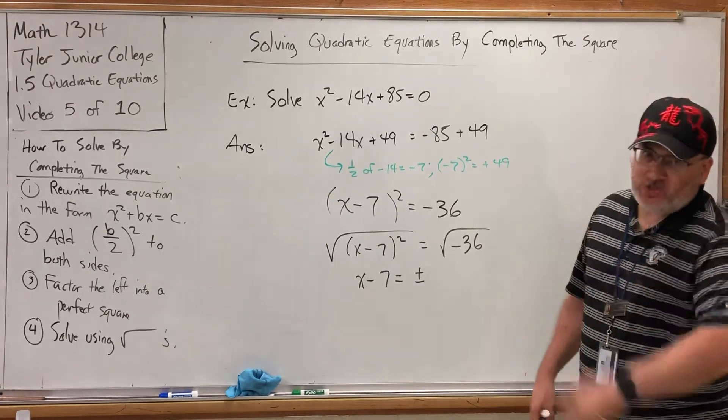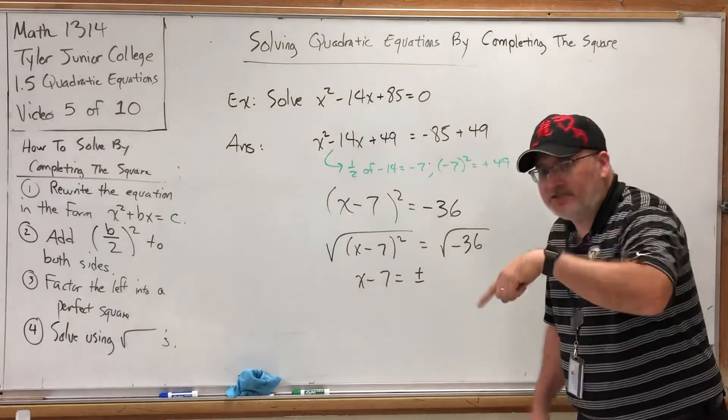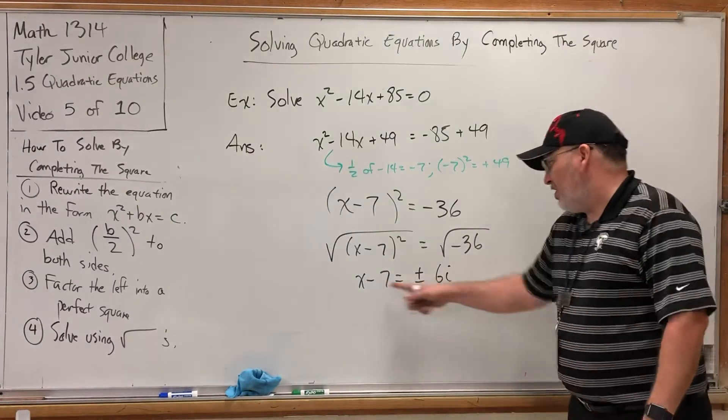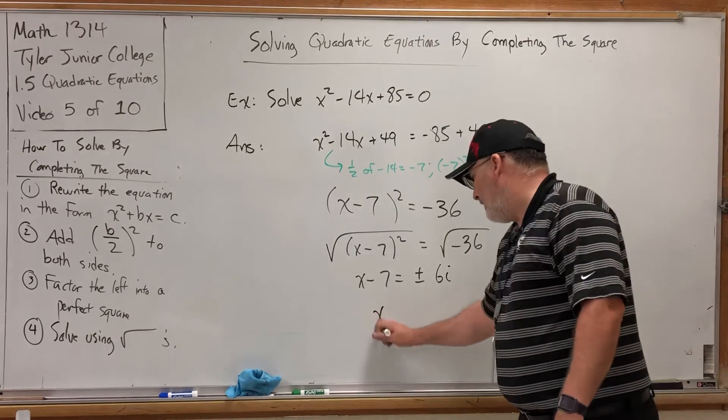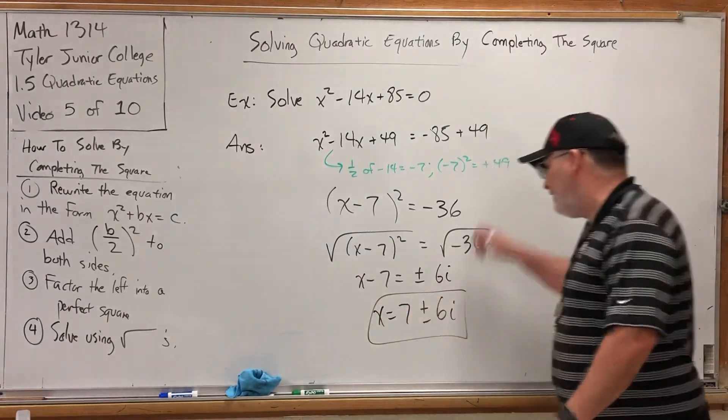What's the square root of negative 36? It's not 6, and it's not negative 6. It's 6i. And because these are not like terms, the best I can do is move the negative 7 over. And when I do that, it becomes positive. I get x equals 7 plus or minus 6i, and it's done.